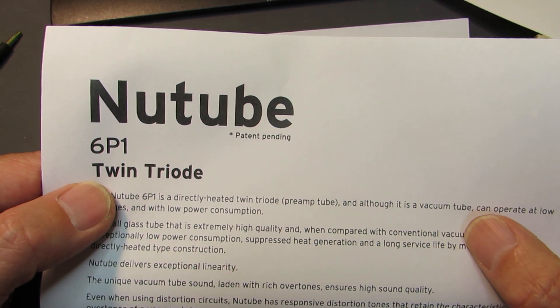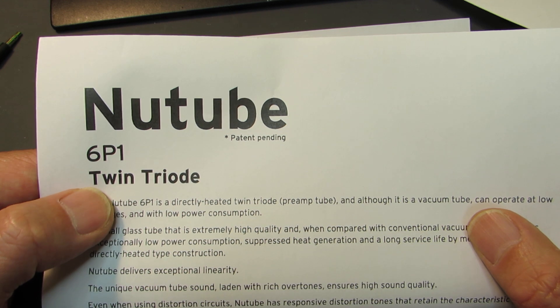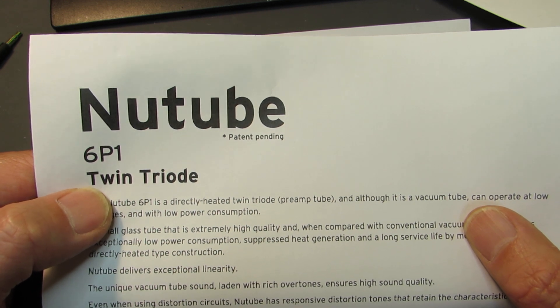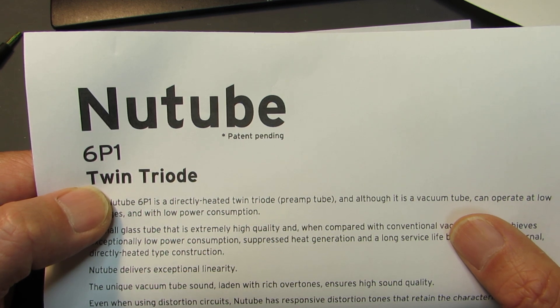Recently I rechecked the characteristics of the new tube, it's a 6P1 twin triode. But in the history, we have plenty of many kinds of twin triodes.